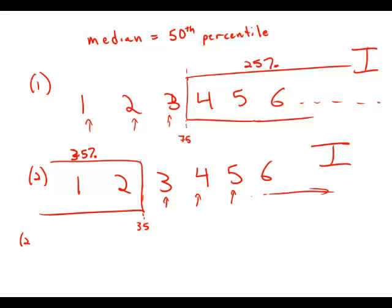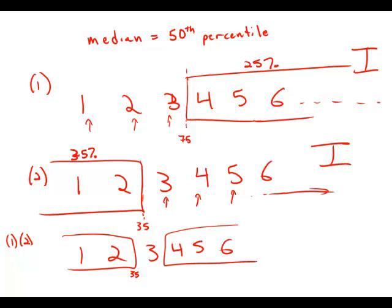But now combine the two statements, statement number one and statement number two. Well, now the line between two and three, that's the 35th percentile. The line between three and four is the 75th percentile. The 50th percentile has to lie between them.